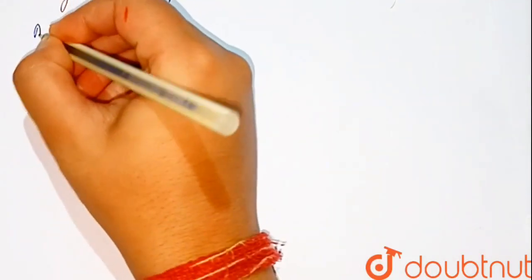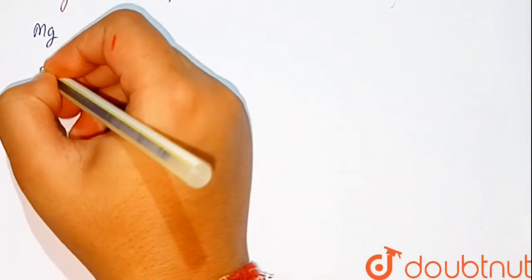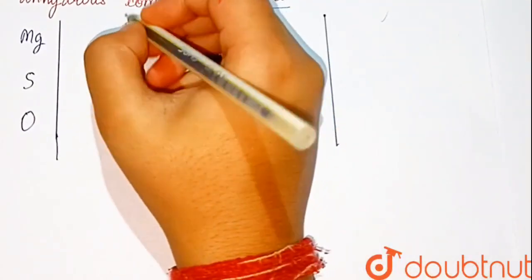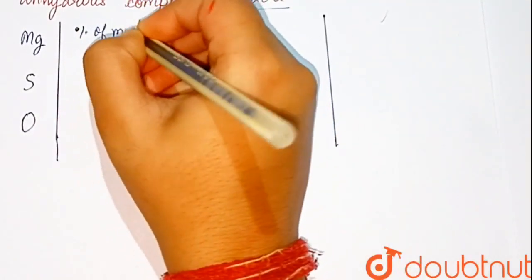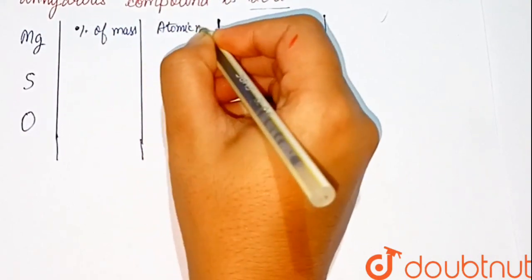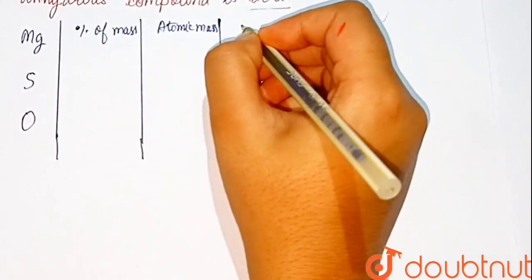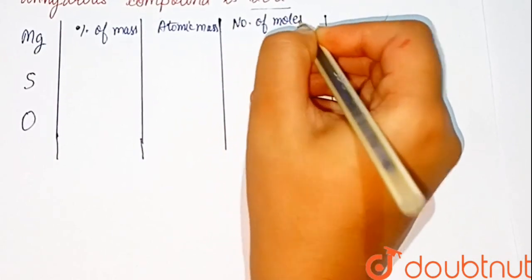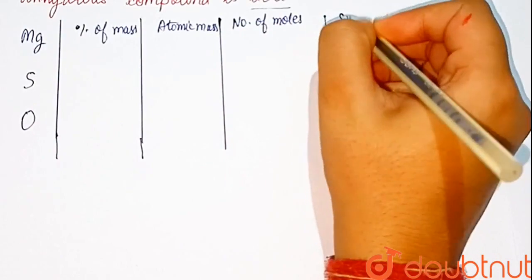Here, elements are given: magnesium, sulfur and oxygen. Now, here, percentage of mass. Here, atomic mass. Here, relative number of moles of element. Here, simple molar ratio.